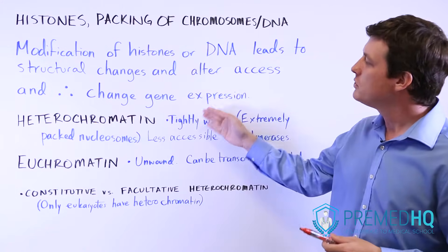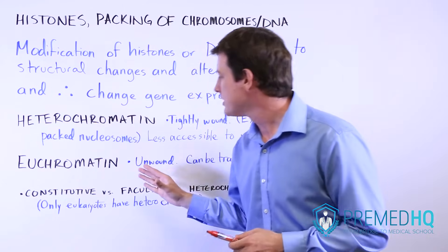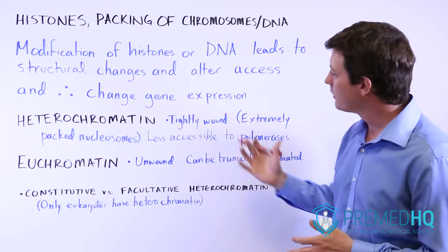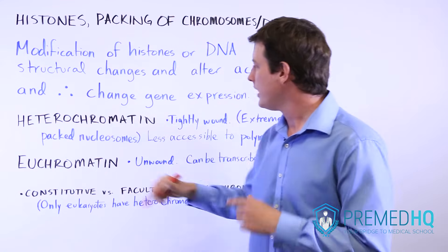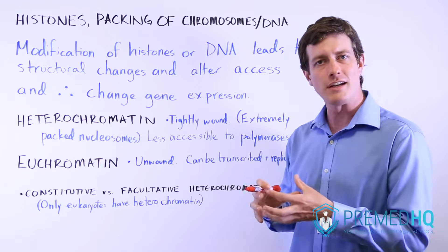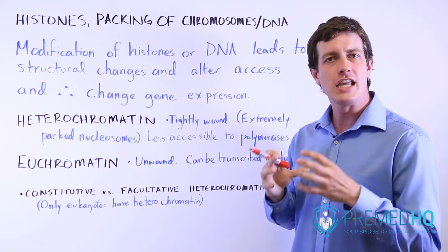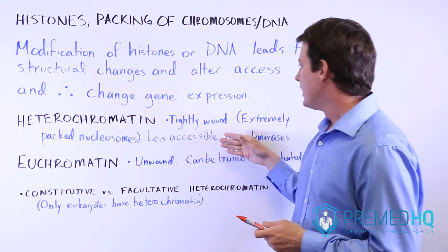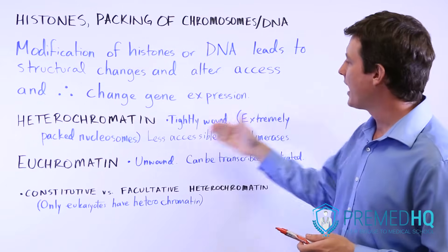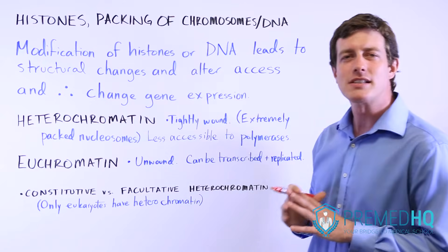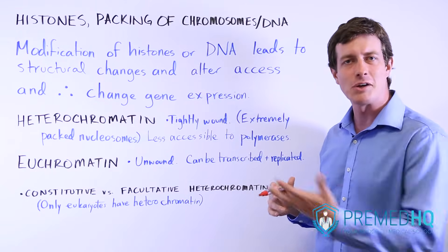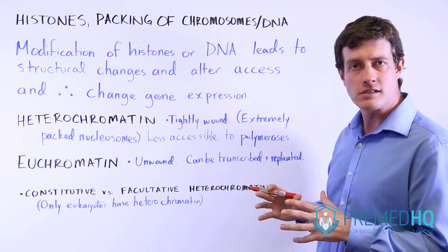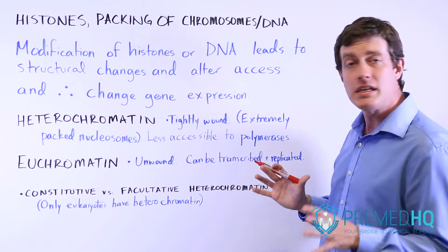We've come up with two terms — heterochromatin and euchromatin — to describe the two states of DNA in eukaryotic cells. Heterochromatin is the DNA that is wrapped around histones, which are then converted into eight-unit nucleosomes. Heterochromatin is very tightly wound, consisting of extremely packed nucleosomes, making it less accessible to the polymerases necessary for replication and transcription. So it's highly compressed, which is good for fitting into the nucleus, but it cannot be expressed.